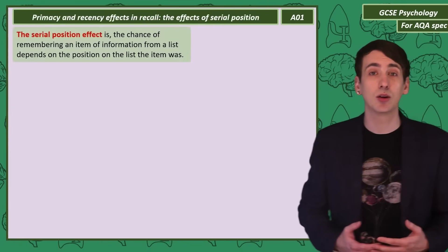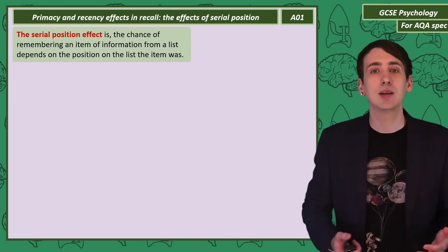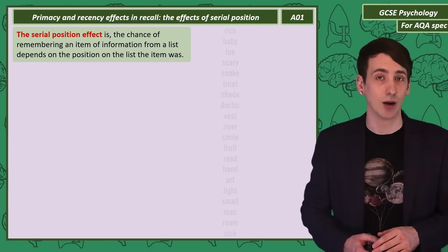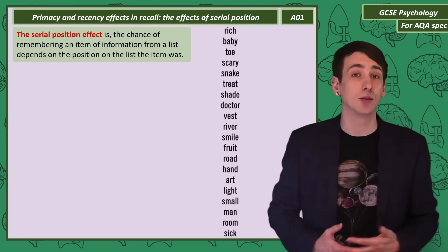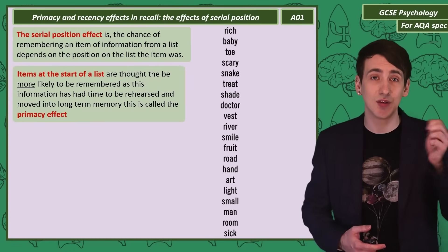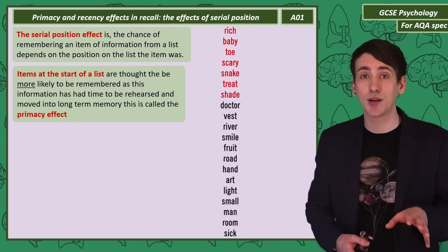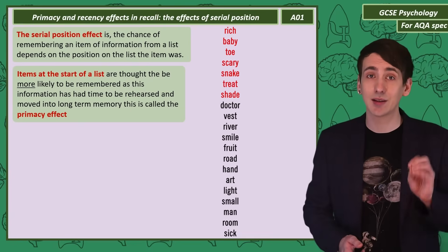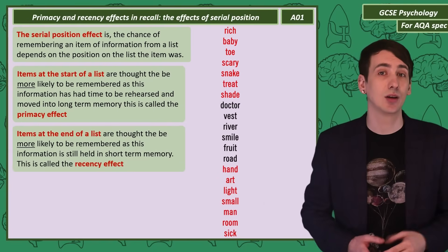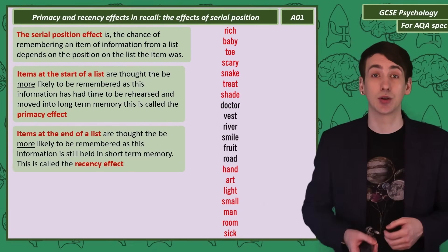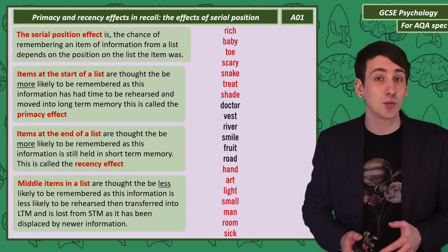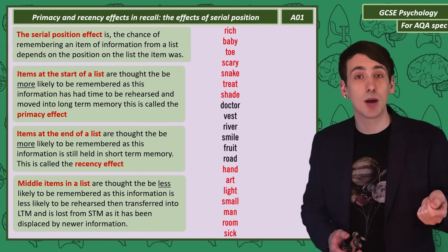An effect we need to understand in memory is something called the serial position effect. If you read a list of 20 items and try to recall them, your recall of each word depends on its position on the list. The primacy effect suggests the words at the start of the list were more likely to be remembered, because your brain had time to rehearse those words and put them into long-term memory. The recency effect suggests that the items at the end of the list should have been more likely to be remembered because those words were still in your short-term memory when you started to recall them. But the middle items should have been the least likely to be remembered, as they were less likely to be rehearsed into long-term memory and would have been displaced in short-term memory with more recent words.